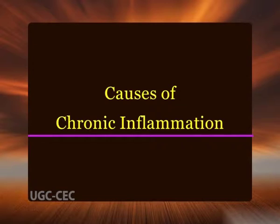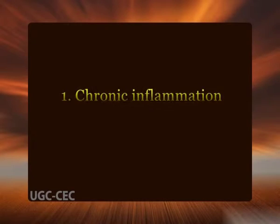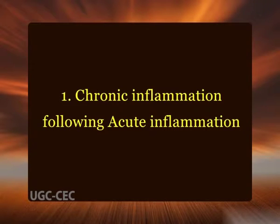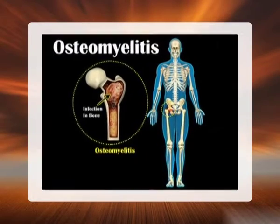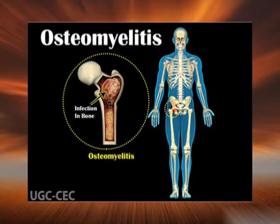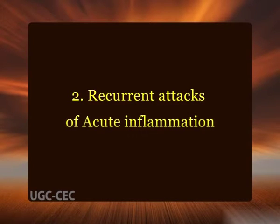Chronic inflammation can be caused by one of the following ways. First, chronic inflammation following acute inflammation: when tissue destruction is extensive, or bacteria survive and persist in small numbers at the site of acute inflammation, it leads to chronic inflammation — for example, in osteomyelitis or pneumonia terminating in lung abscess.